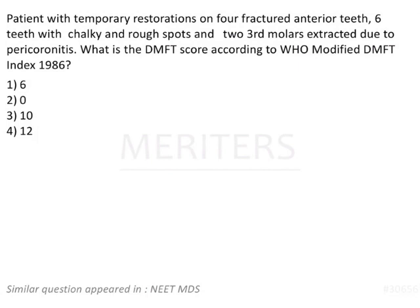Patient with temporary restorations on 4 fractured anterior teeth, 6 teeth with chalky and rough spots, and 2 third molars extracted due to pericoronitis. What is the DMFT score according to WHO modified DMFT 1986? Options are 0, 6, 10, or 12.